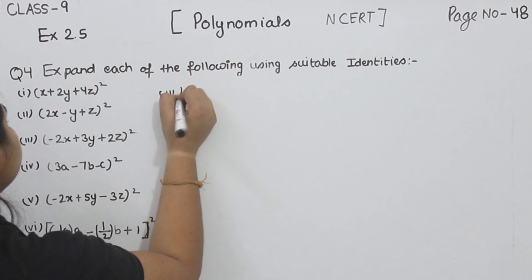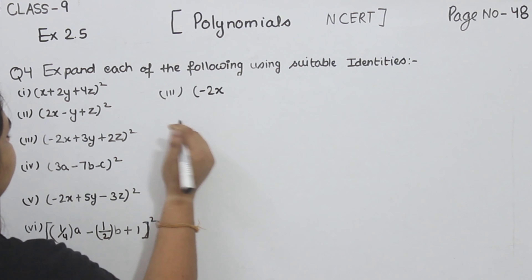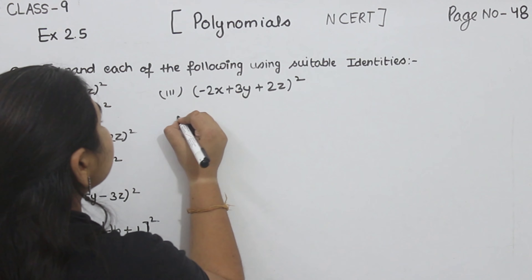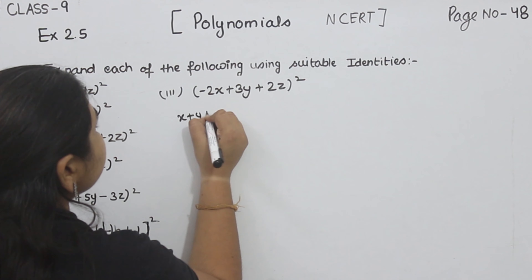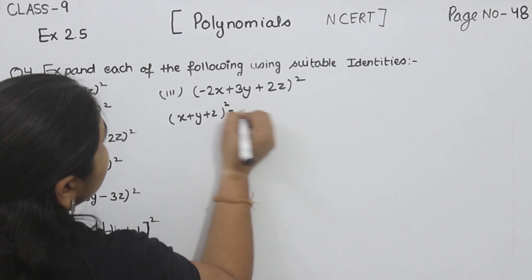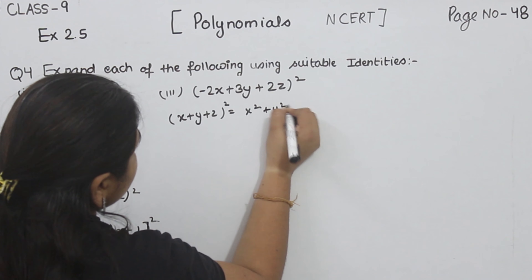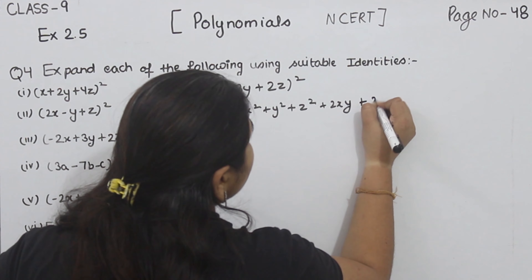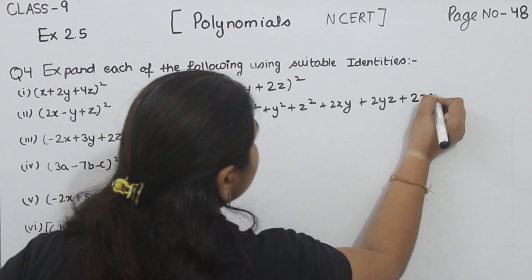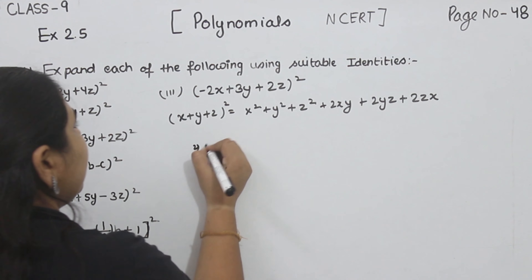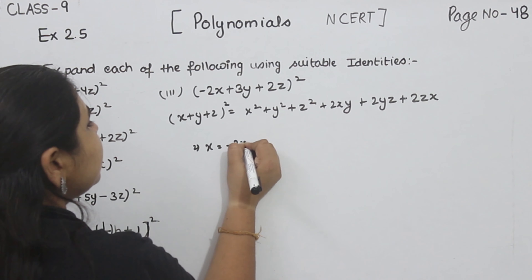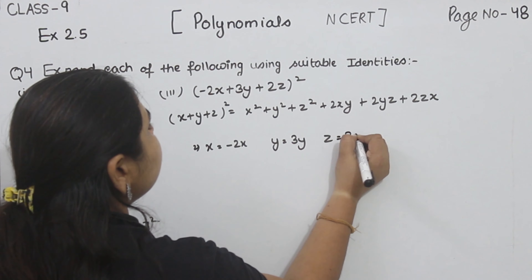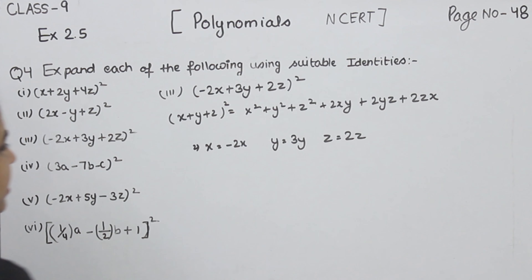Now part 3: minus 2X plus 3Y plus 2Z, whole square. We are going to use the same identity. Here X is equal to minus 2X, Y is equal to 3Y, and Z is equal to 2Z. Now we are going to put this in the identity.